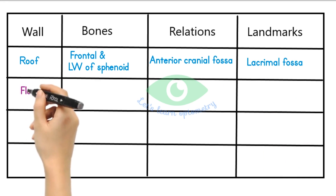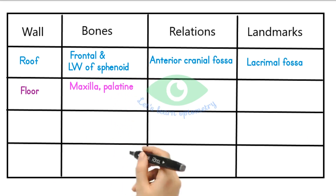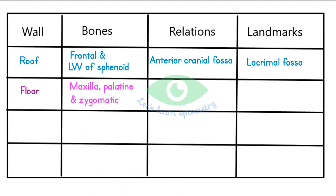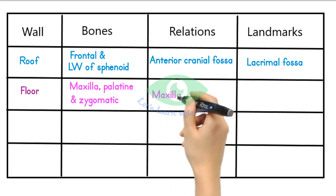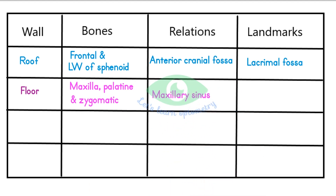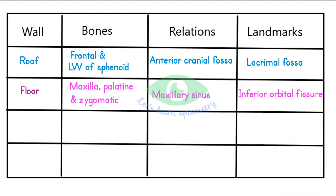The orbital floor is the inferior portion of the orbit. It is made up of the maxilla, palatine and the zygomatic bone. The maxilla separates the orbit from the underlying maxillary sinus. The most important landmark of the floor is the inferior orbital fissure. It separates the floor from the lateral wall and provides passage for several neurovascular structures.